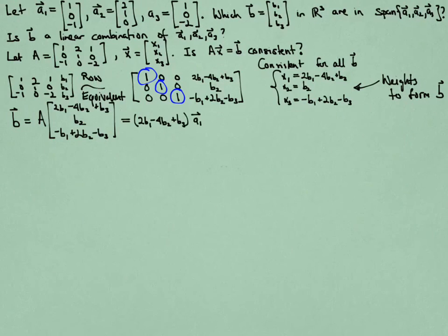Explicitly, the first weight of A1 will be given by the first value of X. There's the second weight, B2, of A2. And then the third equation tells me the weight of A3.